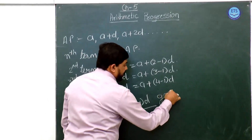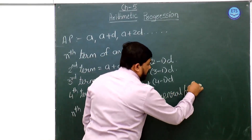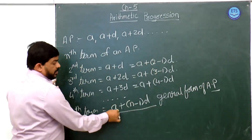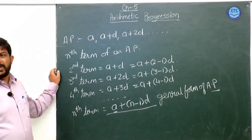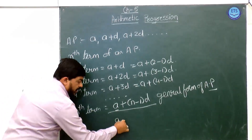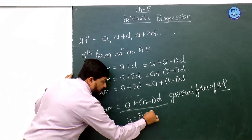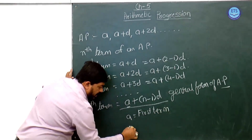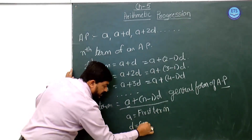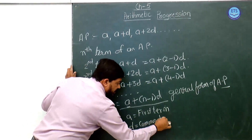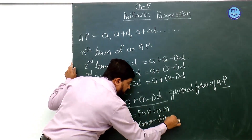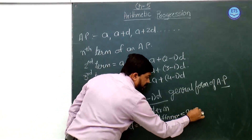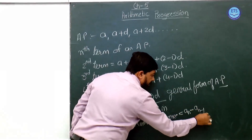This is the general form of Arithmetic Progression, where a is the first term and d is the common difference, which equals aₙ minus aₙ₋₁.